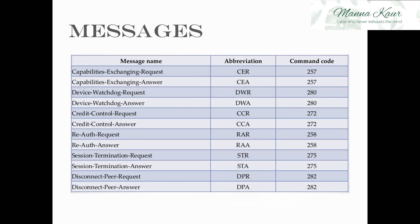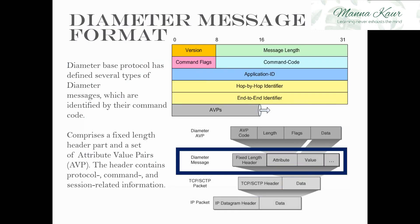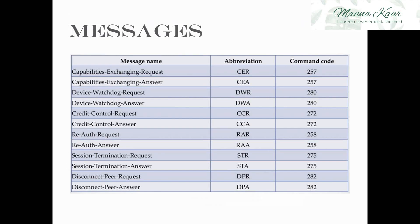Some messages in this format include CER and CEA — Capability Exchange Request and its answer. The capability exchange request is the first initiated communication between two nodes, where one node requests information about the other's capabilities. If for a specific defined time interval there is no exchange of messages, then a DWR — Device Watchdog Request — is sent.